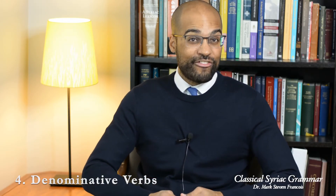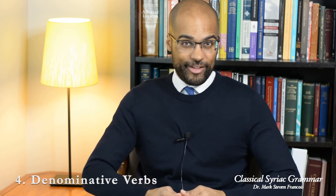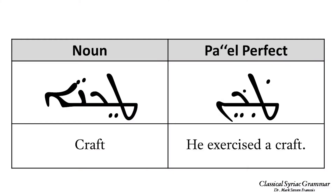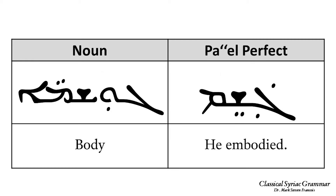Fourth, verbs originally derived from a noun — called denominative verbs — are often placed in the Pa'al. For example, the noun 'tehna' means 'craft,' and the Pa'al verb 'taken' means 'he exercised a craft.' The noun 'meletha' means 'word,' and 'malel' means 'he spoke.' The noun 'gushma' means 'body,' and 'gashem' means 'he embodied.'